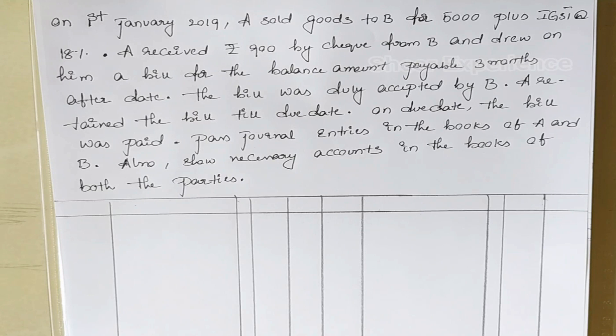Now we'll see the problem. On 1st January 2019, A sold goods to B for 5000 plus IGST at 18%. A received 900 by check from B and drew on him a bill for the balance amount payable three months after date. The bill was duly accepted by B. A retained the bill till due date. On the due date the bill was paid.